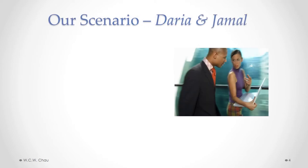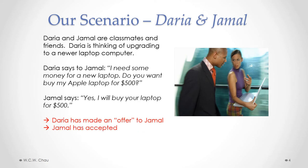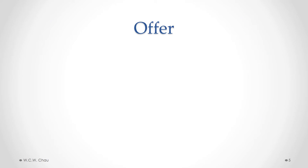To help us understand the rules of offer and acceptance, we will be using a scenario called Daria and Jamal. In this scenario, Daria and Jamal are classmates and friends. Daria is thinking of upgrading to a new laptop computer. One day Daria says to Jamal, 'I need some money for a new laptop — do you want to buy my Apple laptop for $500?' Jamal says, 'I will buy your laptop for $500.' So Daria has made an offer to Jamal, Jamal has accepted that offer, and therefore there is an agreement between them.